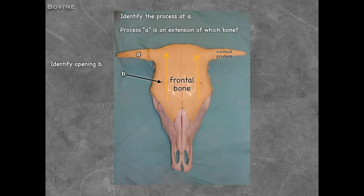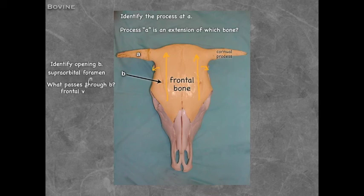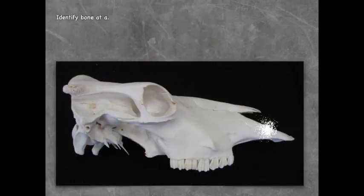The parietal bones are pushed down ventrally. The opening at B is above the orbit — that is the supraorbital foramen. What passes through B? In the bovine it is the frontal vein, however in the equine it is the supraorbital artery and nerve.